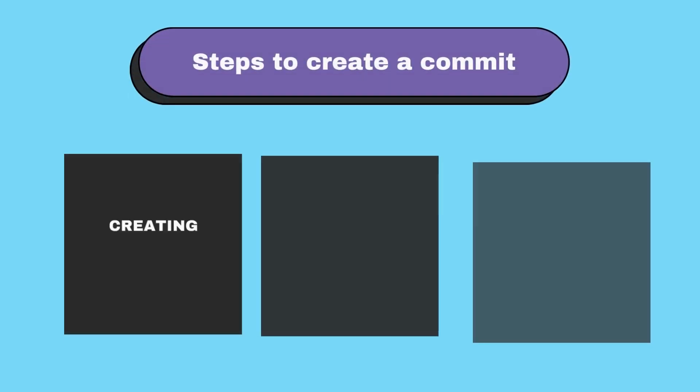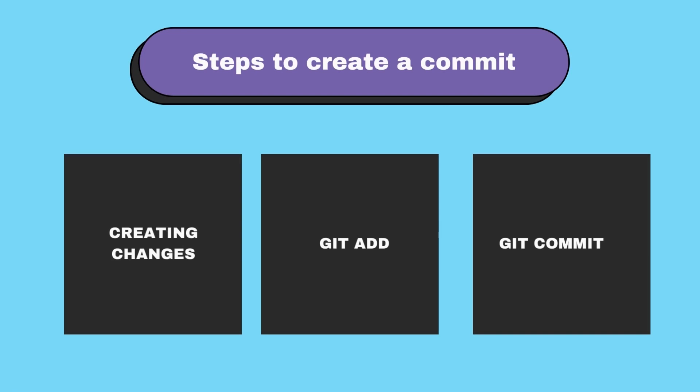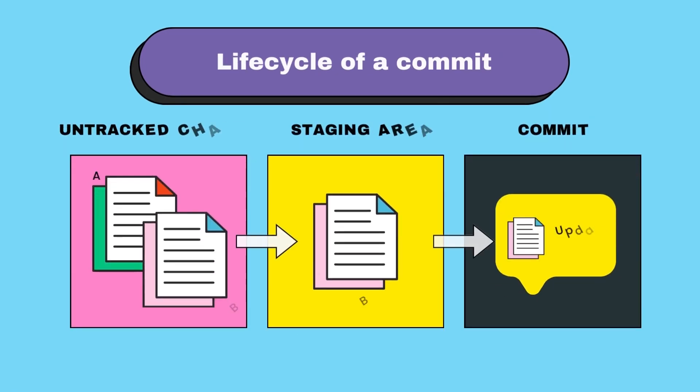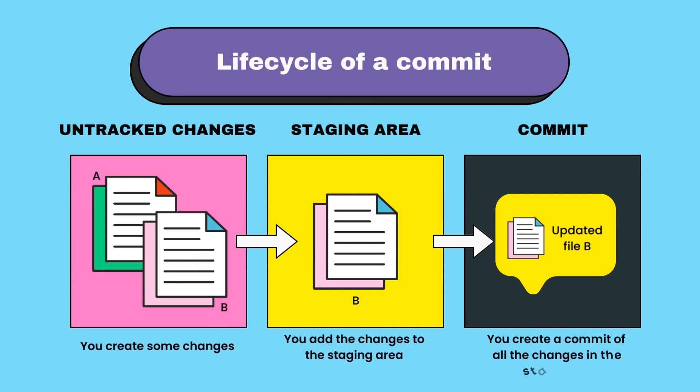Now let's add these changes before we create a commit from them. Notice that there are three steps involved in creating a commit: first, making the actual changes; second, using the git add command to add these changes so they are considered part of your commit; and third, actually using the git commit command to create that commit. So why do we have this second step? Git add lets you pick and choose the changes that you want to be part of the commit. If you have changes in two files, you can include only file one and leave out file two.